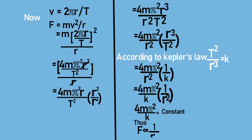Thus, Newton concluded that the centripetal force acting on the planet, which is responsible for circular motion, must be inversely proportional to the square of the distance between planet and sun.